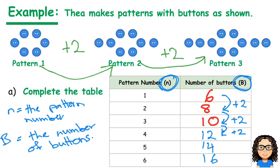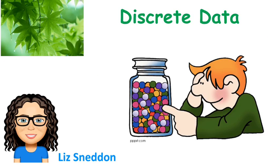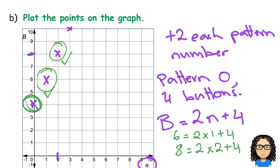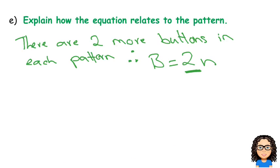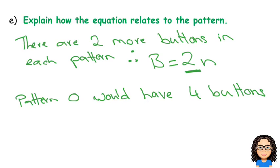So, now think about how did I find that 4. So, that's thinking back to here and going, well, if I went back to pattern number 0, then pattern number 0 would have 4 buttons in it. And that's how I got the value of 4. So, pattern 0 would have 4 buttons. Therefore, B equals 2n plus 4. And it's that plus 4 that's telling me to do that.